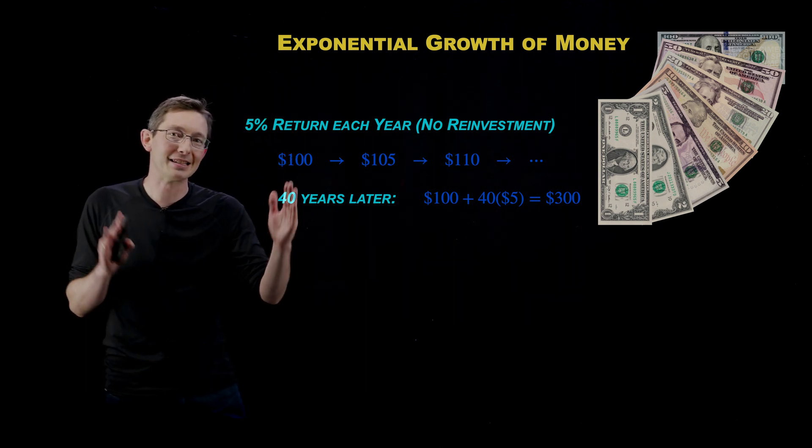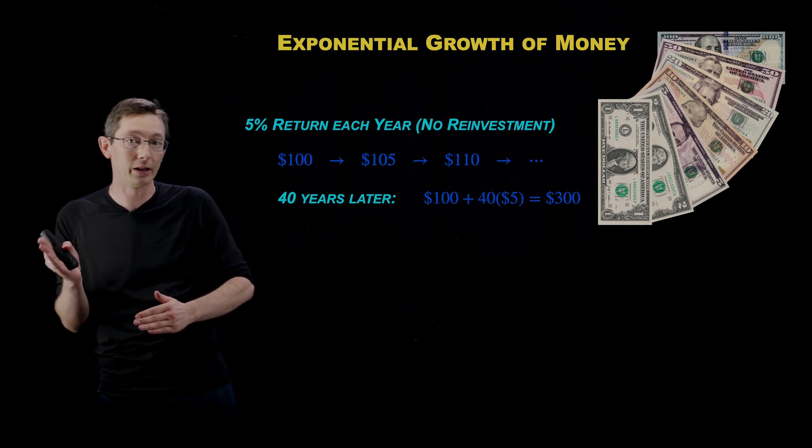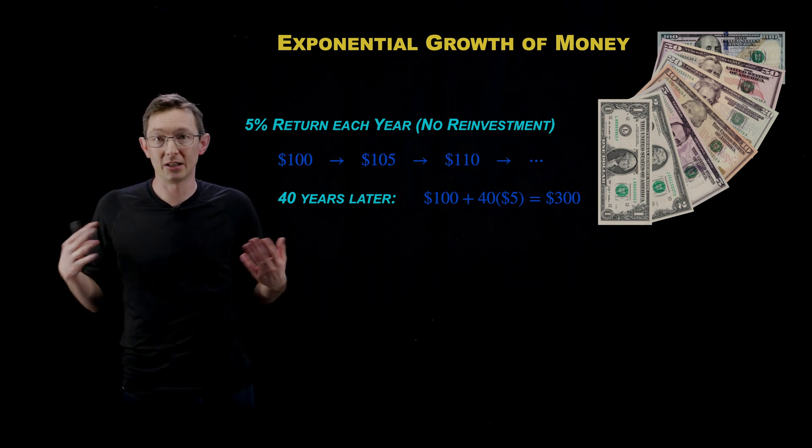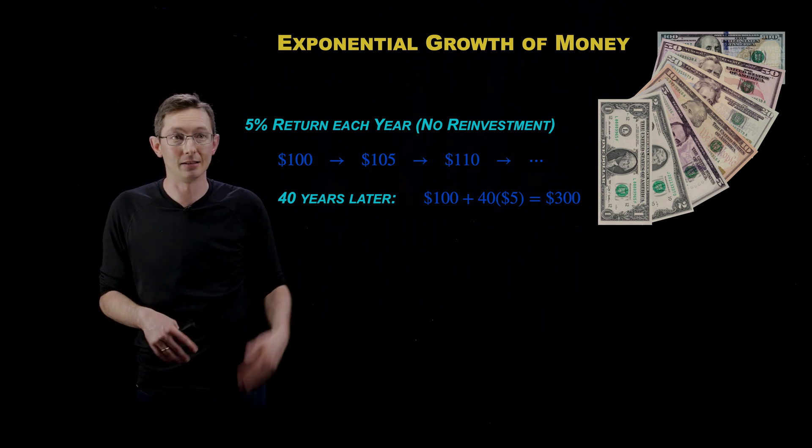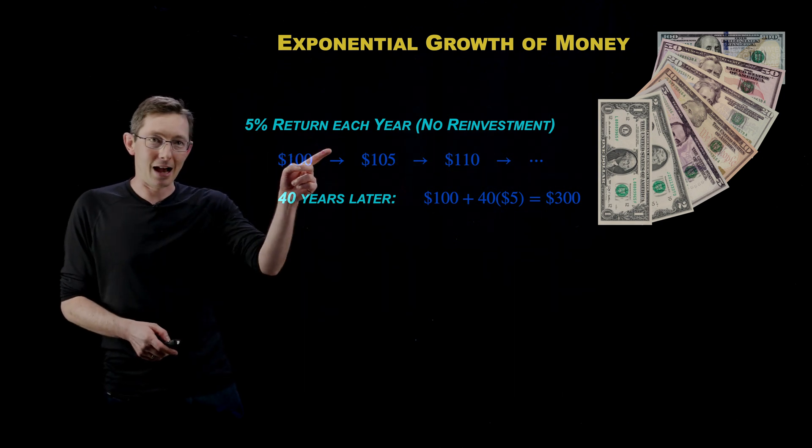And I'm picking 40 years because that is kind of a reasonable work span. If you start working at 25 and you stop working at 65, you have a good 40 years to invest and to make money on your money.